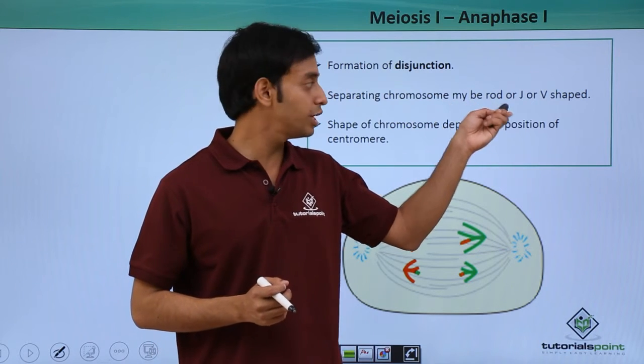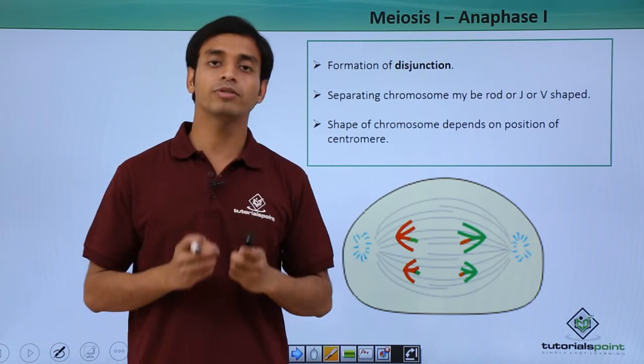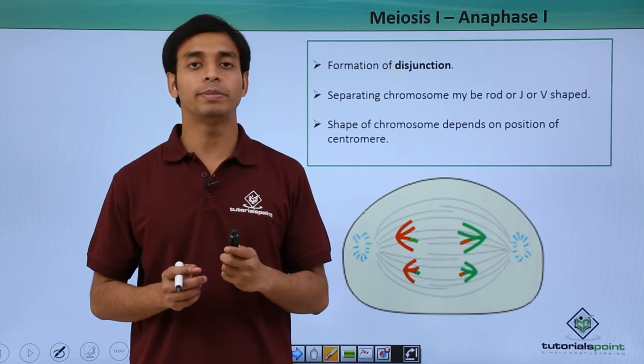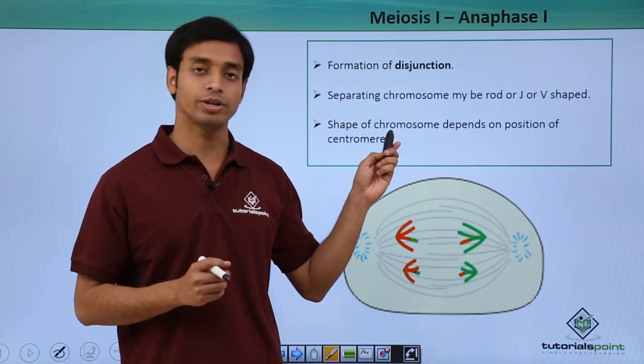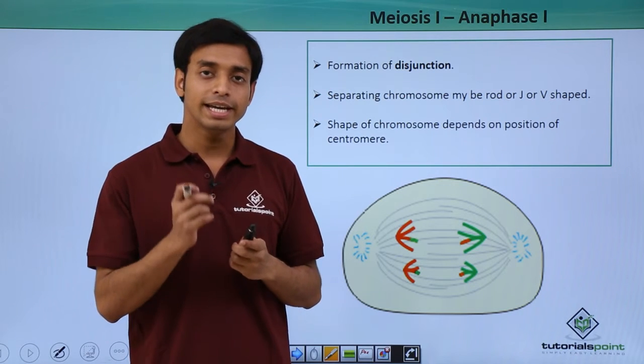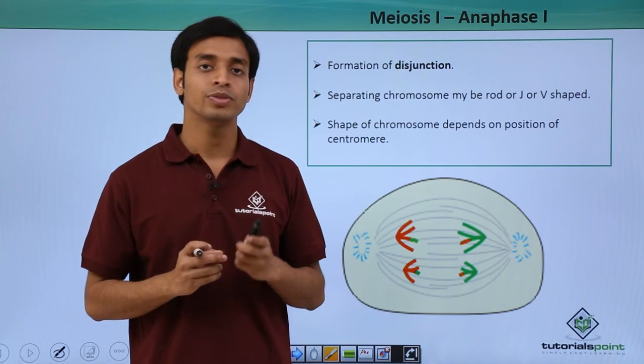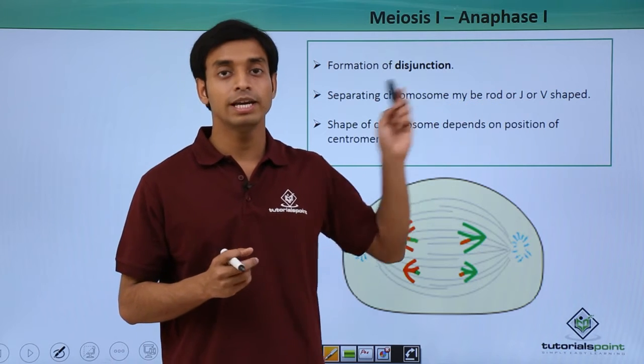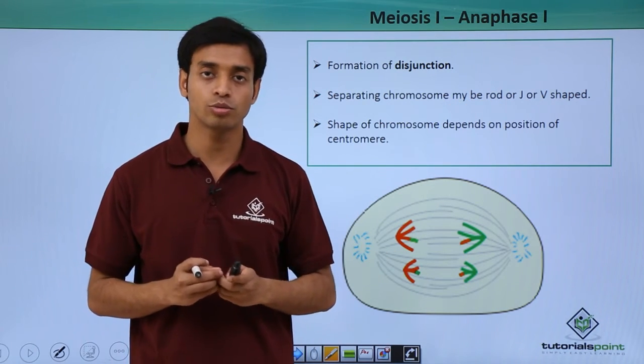The separating chromosomes may be like rod-shaped, J-shaped, or V-shaped. This shape of the chromosome is absolutely dependent on the position of the centromere in the chromosome. If suppose the position of the centromere is at the tip of the chromosome, then the shape during the separation will be like rod shape. If it is at the mid position of the chromosome, the shape of separation will be like V-shape.